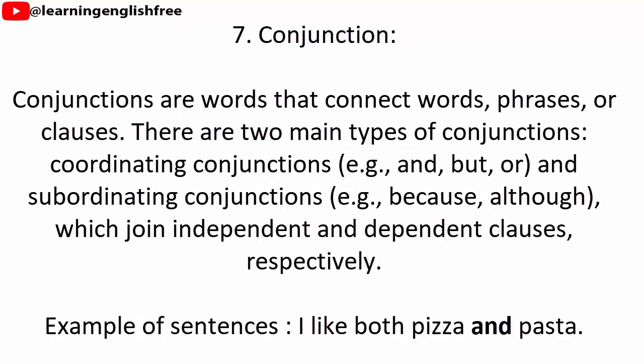7. Conjunction. Conjunctions are words that connect words, phrases, or clauses. There are two main types: coordinating conjunctions, e.g. and, but, or; and subordinating conjunctions, e.g. because, although, which join independent and dependent clauses respectively. Example sentence: I like both pizza and pasta.